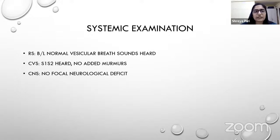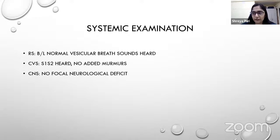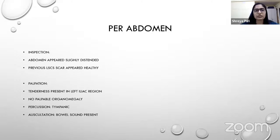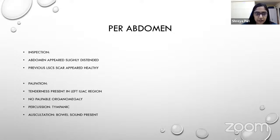Systemic examination: respiratory system — bilateral normal vesicular breath sounds, no added sounds. CVS — S1 and S2 heard with no added sounds. CNS — no focal neurological deficit. Abdominal examination on inspection — abdomen appeared slightly distended; previous LSCS scar appeared healthy. On palpation — tenderness in the left iliac region, no hepatosplenomegaly. On percussion — note was tympanic. On auscultation — bowel sounds were absent.